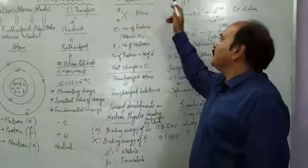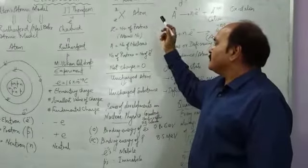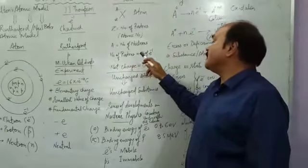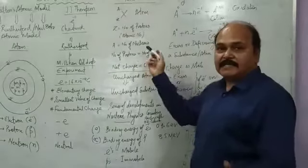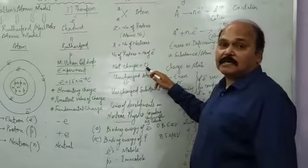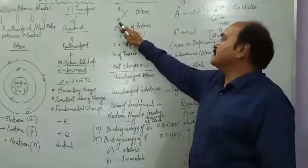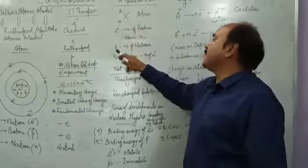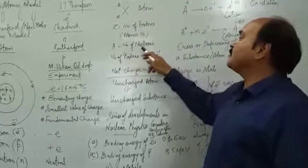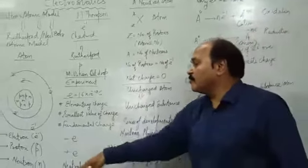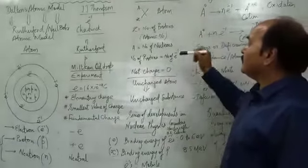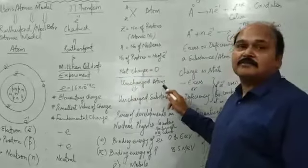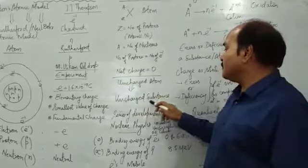Let us talk about a neutral atom. A neutral atom consists of the same number of protons and electrons. The total positive charge of all the protons and the total negative charge of all the electrons cancel each other, and the net charge over an atom is zero. In atomic notation, the subscript Z is the atomic number — the number of protons — and the superscript A is the atomic mass number, which is the total number of nucleons: protons plus neutrons. In a neutral atom, the number of electrons equals the number of protons, so the net charge is zero.